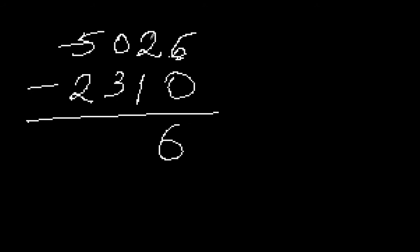In the third position, 0 minus 3 — when we see 0 which is a lesser number than 3, we take it as 10. So 10 minus 3, we get 7. This 1 is now added to the number beside it; it's 2 there, so we add this 1 with 2 and it becomes 3.